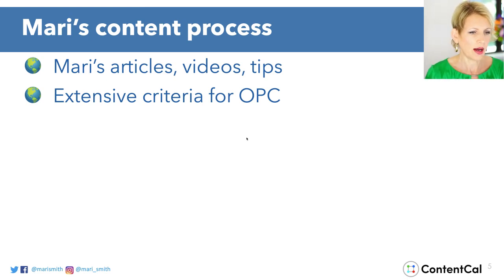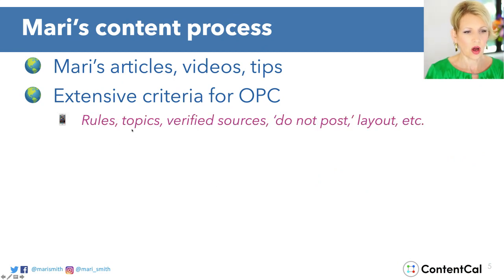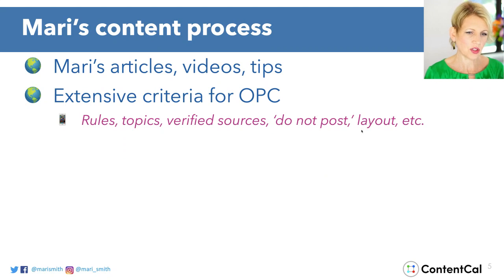I recommend having very extensive written criteria for the kinds of content you want to put the spotlight on, because it's your brand by association. If you tweet something or post something anywhere on your social channels, you're in essence endorsing that content and the content creator. I have certain rules, topics, verified sources, a list of do-not-post types, and a specific layout — like on my tweets I always add a little comment, some emojis, maybe some hashtags.